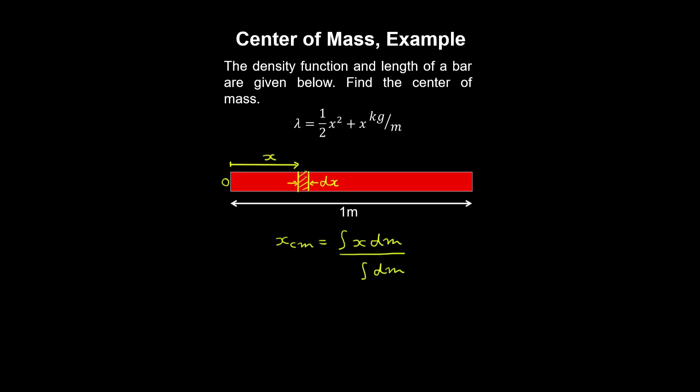So for our one-dimensional bar, we can write our differential mass as the density multiplied by the cross-sectional area of the bar, which is constant, by the thickness of the mass element.